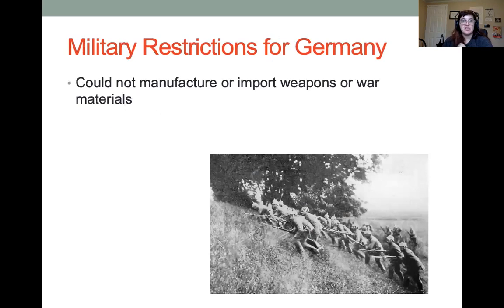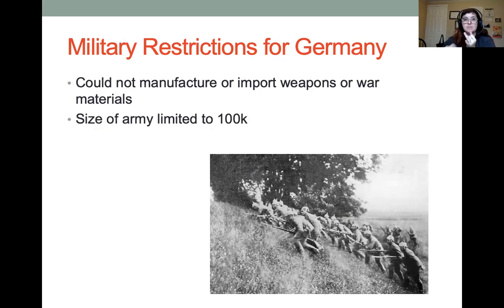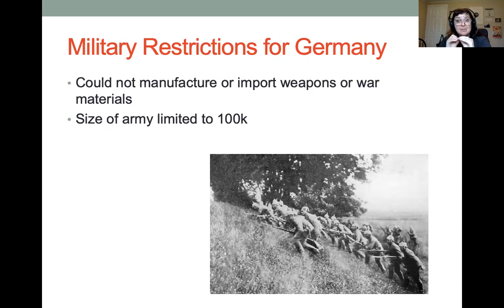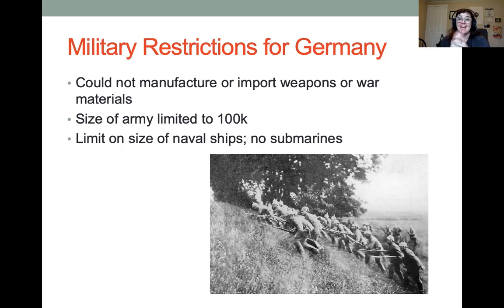For military restrictions, the basic idea was to prevent Germany from ever being able to start a war again. Germany could not manufacture or import weapons or war materials. The size of their military was limited to 100,000 men — extremely small compared to the current U.S. military of about 1.5 to 2 million. Germany was also limited in the size of ships it could have, was not allowed submarines or airplanes, and couldn't have artillery over a certain size. Basically, the treaty tried to take away Germany's entire ability to make war.